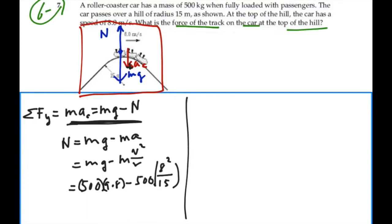So this normal force is going to equal 500 times 9.8 minus 500 times 8 squared divided by 15, which equals 2,767 newtons.